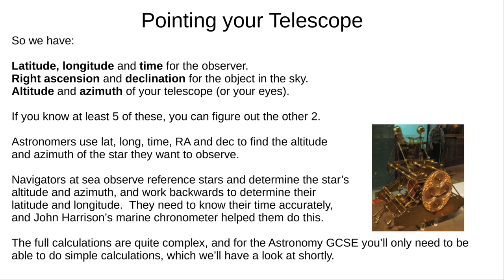If you have five of these seven numbers, you can work out the other two. Usually, astronomers will know latitude, longitude, time, right ascension, and declination, and then calculate altitude and azimuth so that they know where to point their telescope. Navigators do the reverse — if they know the altitude and azimuth of a star, they can calculate their own longitude and latitude. This was very difficult in the past, when clocks would fail on a ship that kept rocking and rolling. John Harrison created the H1 marine chronometer, which kept accurate time at sea, and he won a big cash prize for this, probably saving the lives of thousands of sailors.